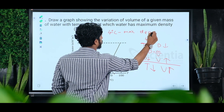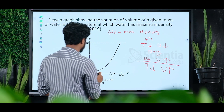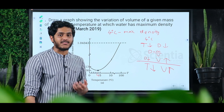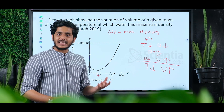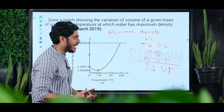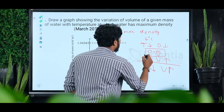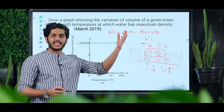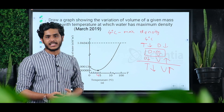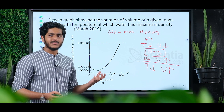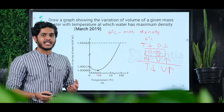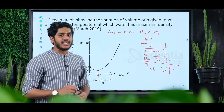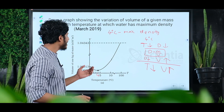At 4 degrees Celsius, water has maximum density and minimum volume, because density and volume are inversely related. Maximum density at 4 degrees Celsius means minimum volume at 4 degrees Celsius.